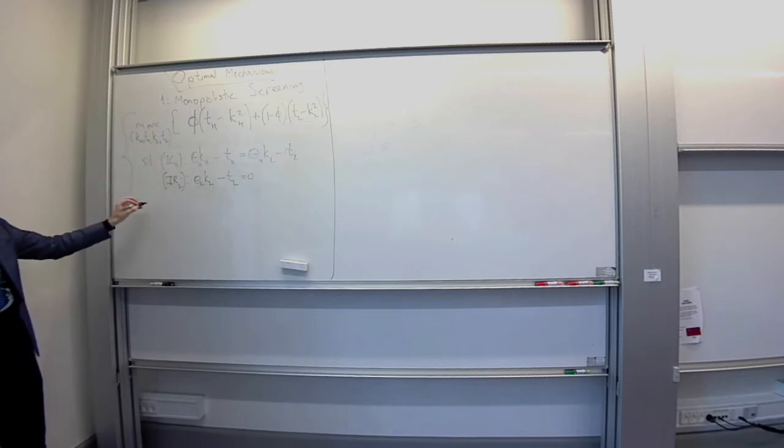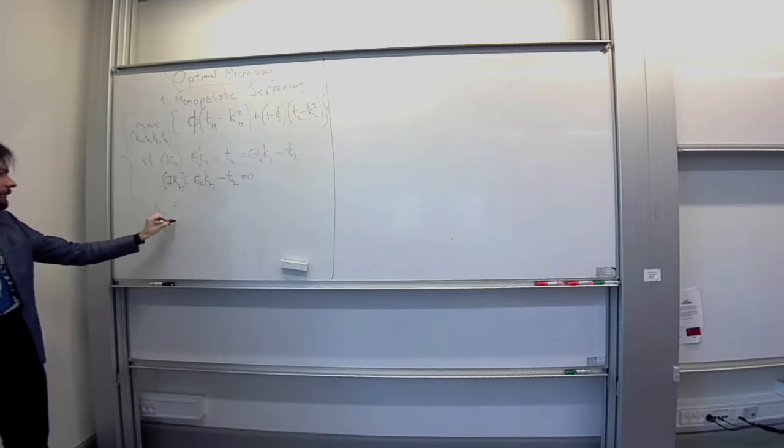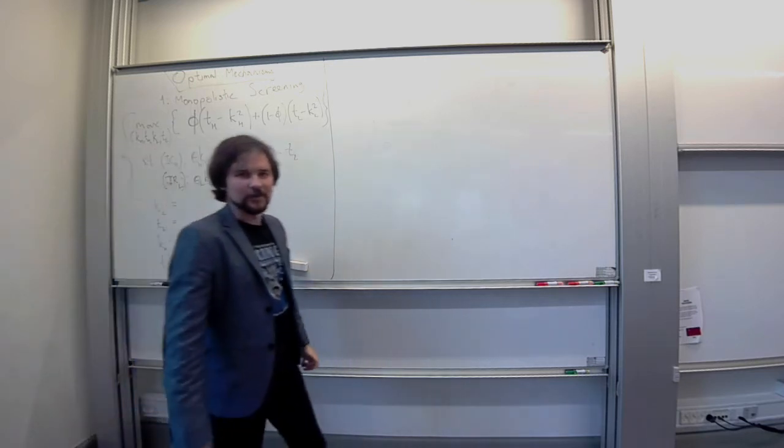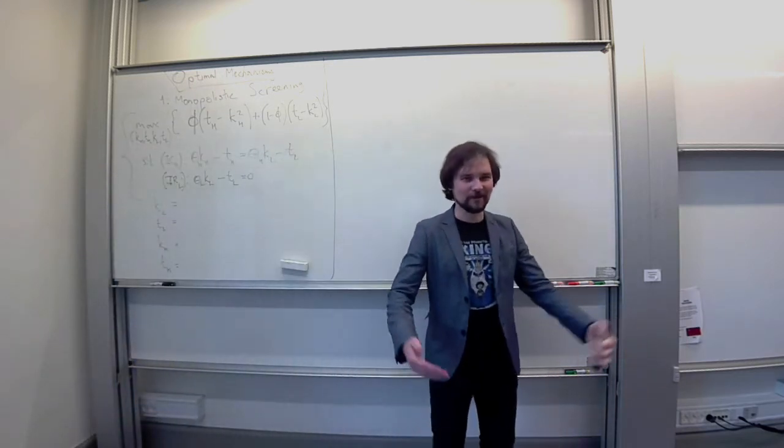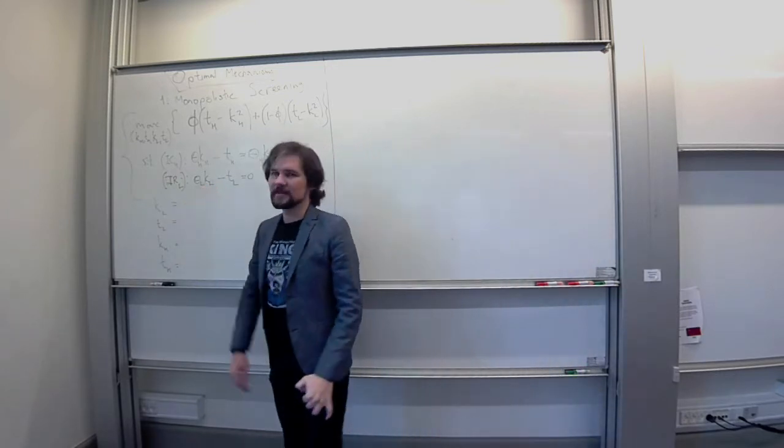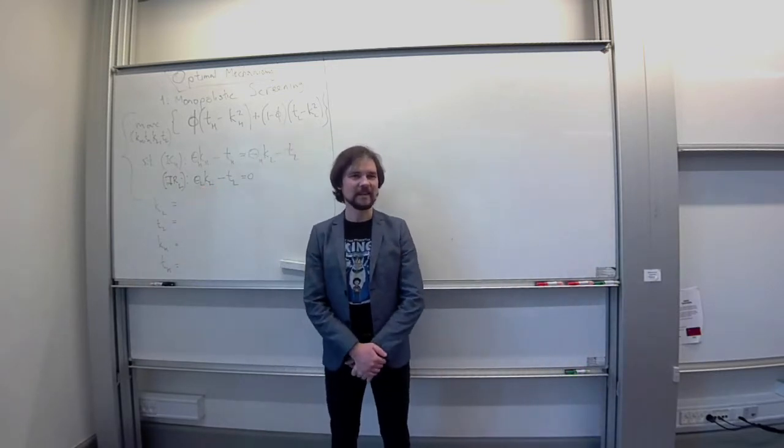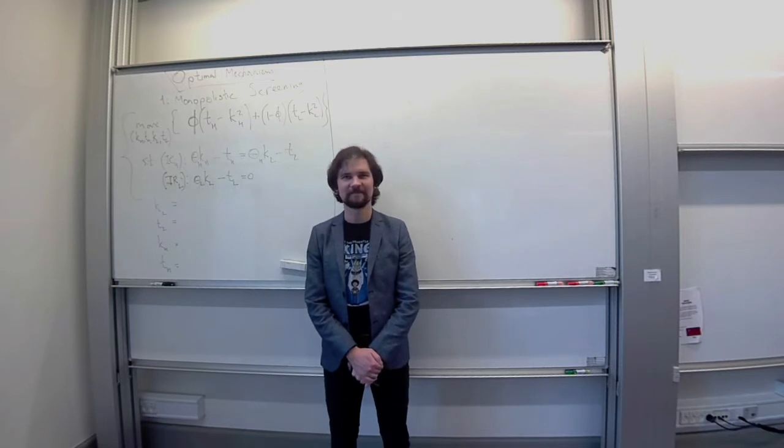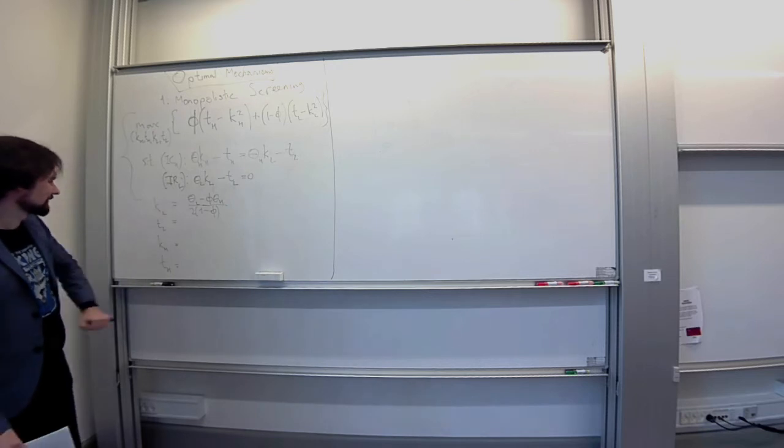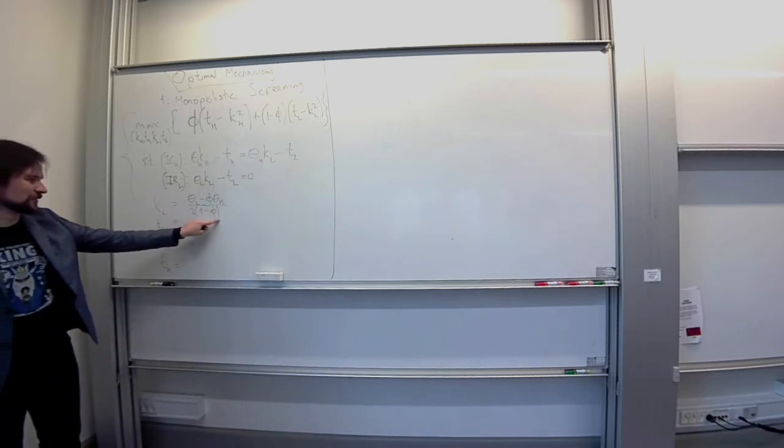What I asked you to do at home is to finish solving this problem. We simplified it in class. We brought it to this form. And what you just needed to do was to derive the four values: KL, TL, KH and TH. Since this is something that you should have done, you tell me what these are. What is KL? Can somebody tell me that? That's what I got in different form. That's good. We're off to a good start.